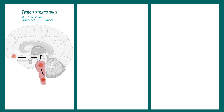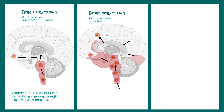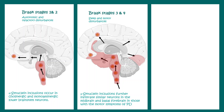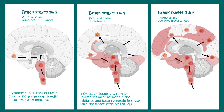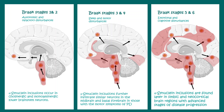Parkinson's disease progression has different phases known as Braak stages. In stage 1 and 2, there are autonomic and olfactory disturbances, and Lewy bodies can be found in monoaminergic and cholinergic neurons of the brainstem. In stage 3 and 4, there are sleep and motor-related disturbances, and alpha-synuclein aggregates have spread to the basal part of the forebrain and midbrain. In the advanced stages 5 and 6, there are emotional and cognitive disturbances, and alpha-synuclein is present in the limbic system as well as the cortex.